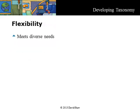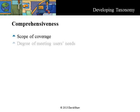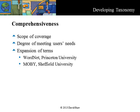Flexibility is the capability to meet diverse needs, both now and in the future. An inflexible taxonomy will not be extensible easily, and will have frequent change requests. This can have dire consequences. When a taxonomy is implemented in a system and content is stored in a node, it is guaranteed to be incredibly difficult and risky to add or move nodes. Comprehensiveness is the scope of coverage — the degree to which the taxonomy meets the needs. This may include the expansion of terms using a thesaurus, or other mechanisms to address differences in the usage of terminology. There are several open source thesauri available such as WordNet from Princeton University, and Moby from Sheffield University.